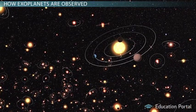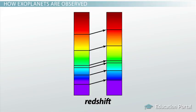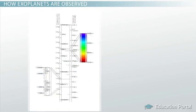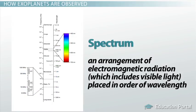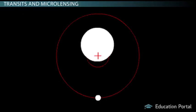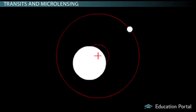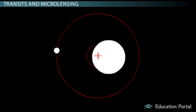The wobble of the star produces Doppler shifts, which can be detected in the star's spectrum. A spectrum is an arrangement of electromagnetic radiation, which includes visible light placed in order of wavelength. Detecting such a gravitationally induced wobble on a planet isn't the only way extrasolar planets can be found.